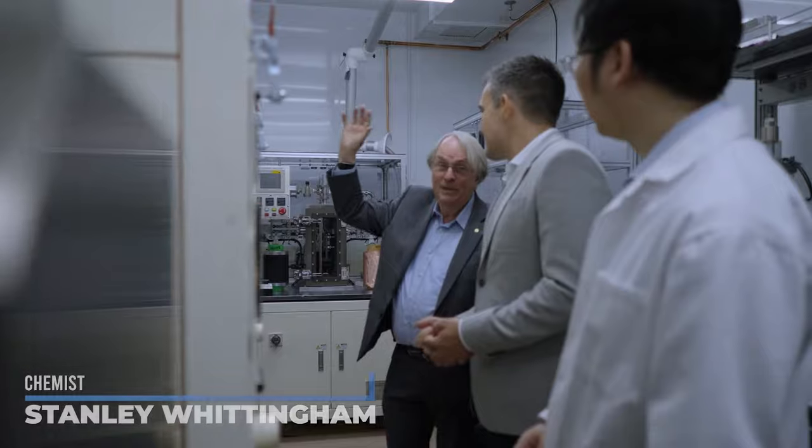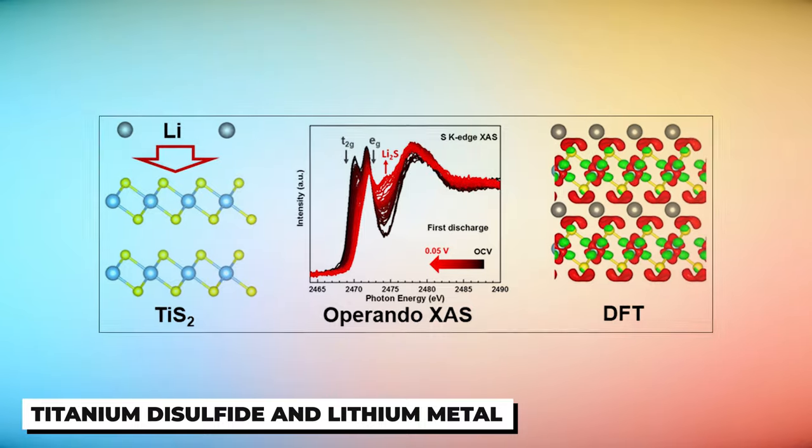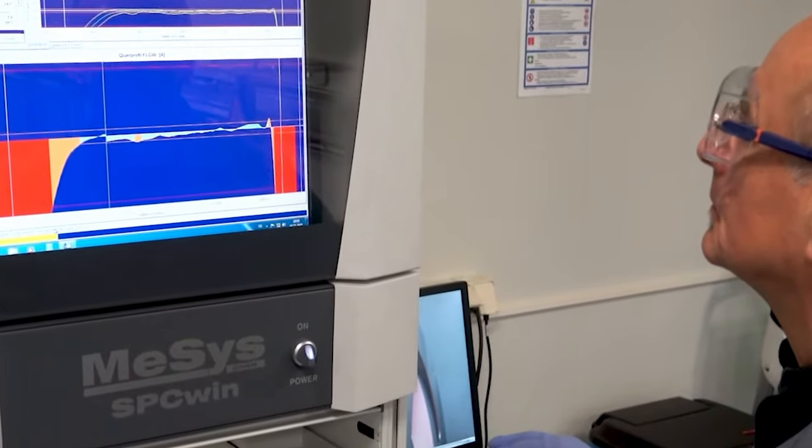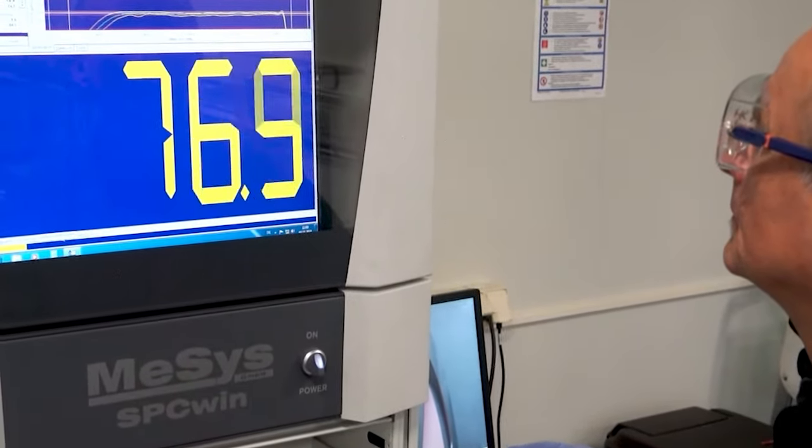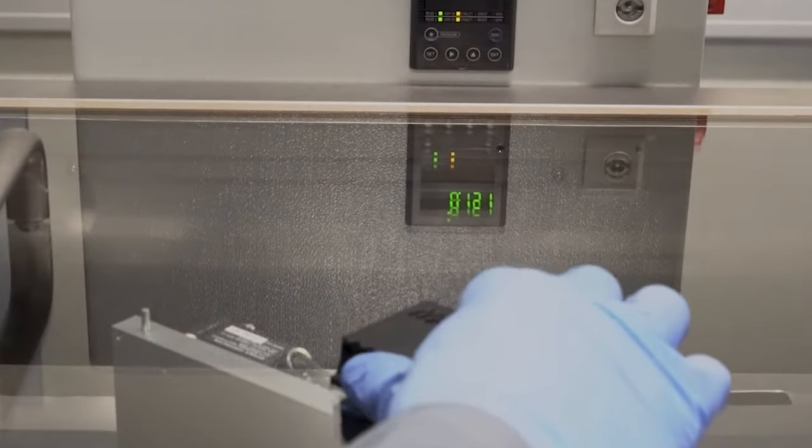Back in the 1970s, chemist Stanley Whittingham worked for Exxon Mobil, embarked on a mission to create a self-charging battery. He used titanium disulfide and lithium metal for the electrodes. Well, it had its fair share of safety concerns and challenges. Because the batteries could short-circuit and catch fire, Exxon stopped the experiment.